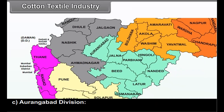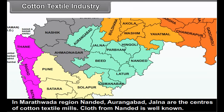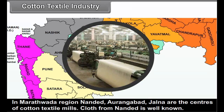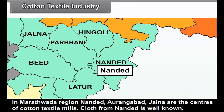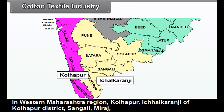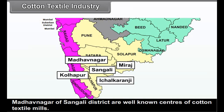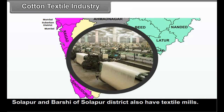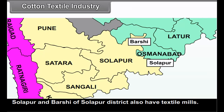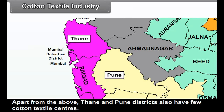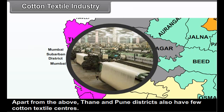(c) Aurangabad division — in the Marathwada region, Nanded, Aurangabad and Jalna are centres of cotton textile mills. Cloth from Nanded is well known. (d) Pune division — in western Maharashtra, Kolhapur, Ichalkaranji of Kolhapur district, Sangli, Miraj and Madhavnagar of Sangli district are well-known centres of cotton textile mills. Solapur and Barshi of Solapur district also have cotton textile mills. Thane and Pune districts also have a few cotton textile mills.